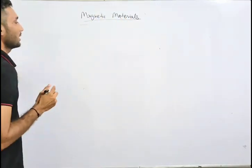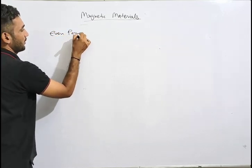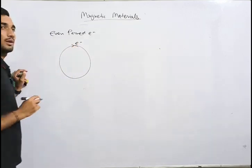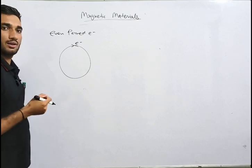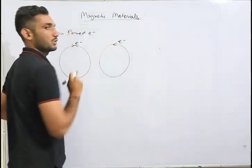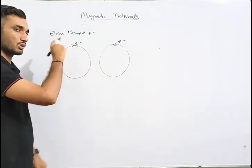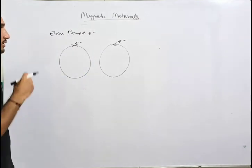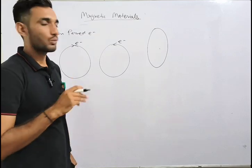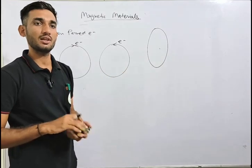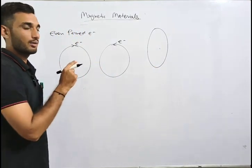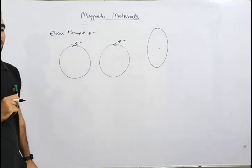Let us take two even paired electrons in the same orbit. One electron is moving clockwise and the other is moving anticlockwise in the same orbit. Each moving electron forms a current-carrying loop. Any current-carrying closed loop behaves like a magnetic dipole, so both these electrons act as magnetic dipoles and each produces a magnetic field.